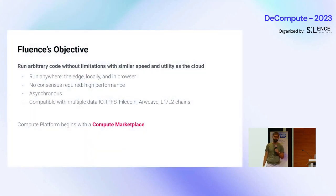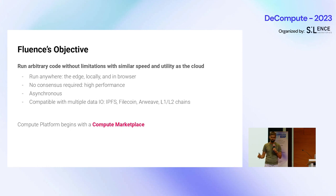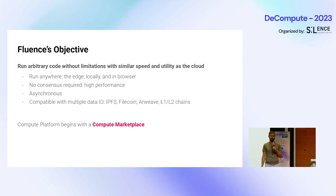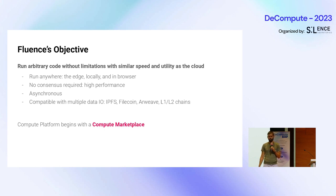Fluence's objective is to enable running arbitrary code without limitations with similar speed and utility as the cloud. We want to run general-purpose applications anywhere — on the edge, locally, in the browser, on the backend. No consensus required, it's optional. That means we have highly-performant computation which is quite cheap. It's asynchronous, so you can use parallelism on the network heavily. And it's compatible with multiple data I/O — you can read and write from different protocols, chains, like IPFS, Filecoin, L1, L2, and so on.